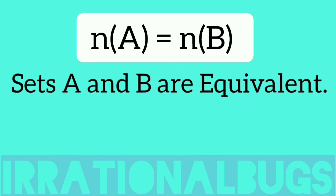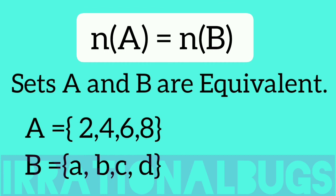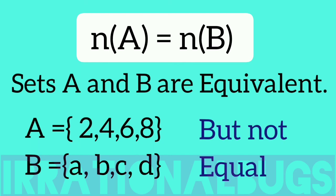Again, if we go reverse, two sets A and B, the cardinal number is same, so they are equivalent. But if we take set A: 2, 4, 6, 8, cardinal number 4. B: A, B, C, D, again cardinal number 4. They are equivalent, but they are not equal because the elements are different. So, we have to remember that equal sets are equivalent. But, reverse is not always true.